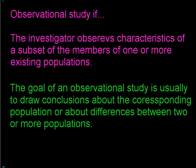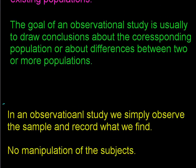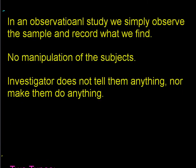An observational study is one where the investigator observes characteristics of a subset of the members of one or more existing populations. The goal is usually to draw conclusions about the corresponding population or about differences between two or more populations. We pick a sample from a population, hope that sample accurately represents the population, and then simply observe. In an observational study, we simply observe the sample and record what we find. There is no manipulation of the subjects — the investigator does not tell them anything nor make them do anything.